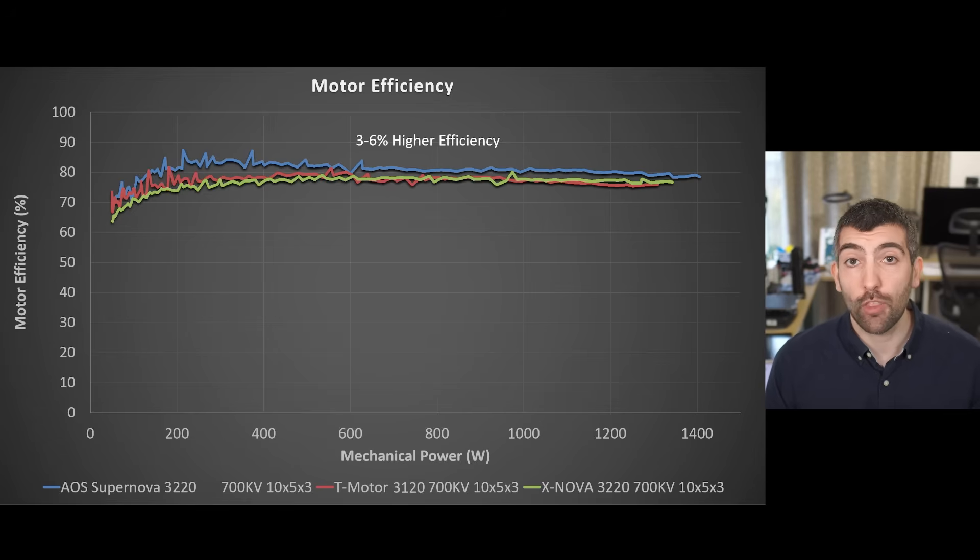The AOS Supernova 3220 is significantly more efficient than either of those two motors and it's between three to six percent more efficient depending on where you are looking in the throttle band. So if you're looking kind of low down it's about six percent more efficient so we're moving from about 78 percent up to about 84 percent efficient and if you're looking high in the throttle where you're up at sort of over a thousand watts of mechanical power then the efficiency gain is between three and four percent so you're moving from about 77 percent up to about 80 or 81 percent depending on exactly where you're looking in the throttle band. This extra efficiency is going to give you longer flight times and it's also going to mean that the motor doesn't get so hot when you're delivering a lot of thrust or a lot of power for a long period of time.